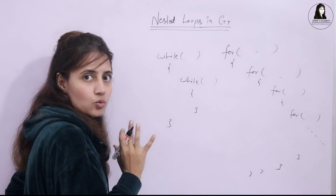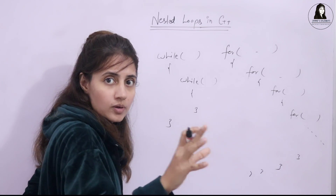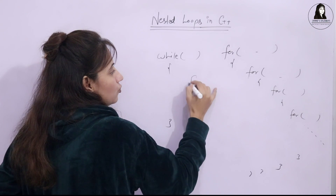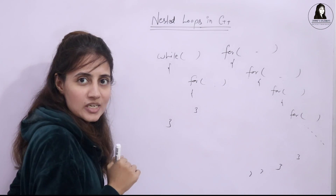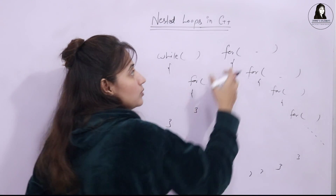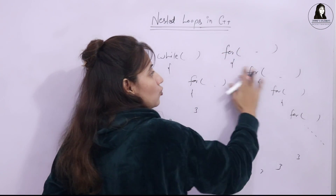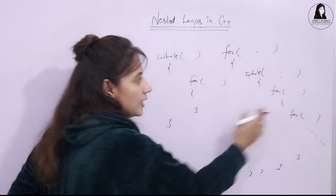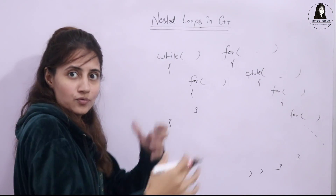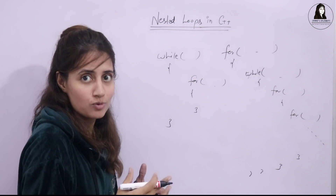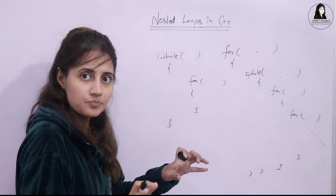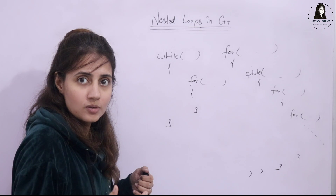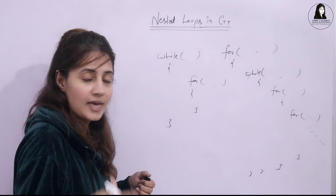The same applies to while loops and do-while loops. It is also possible to have a while loop containing a for loop — this is also nesting. Mixing of different loop types is also possible in nesting. Nesting of range-based for loops is also possible up to any number of levels.